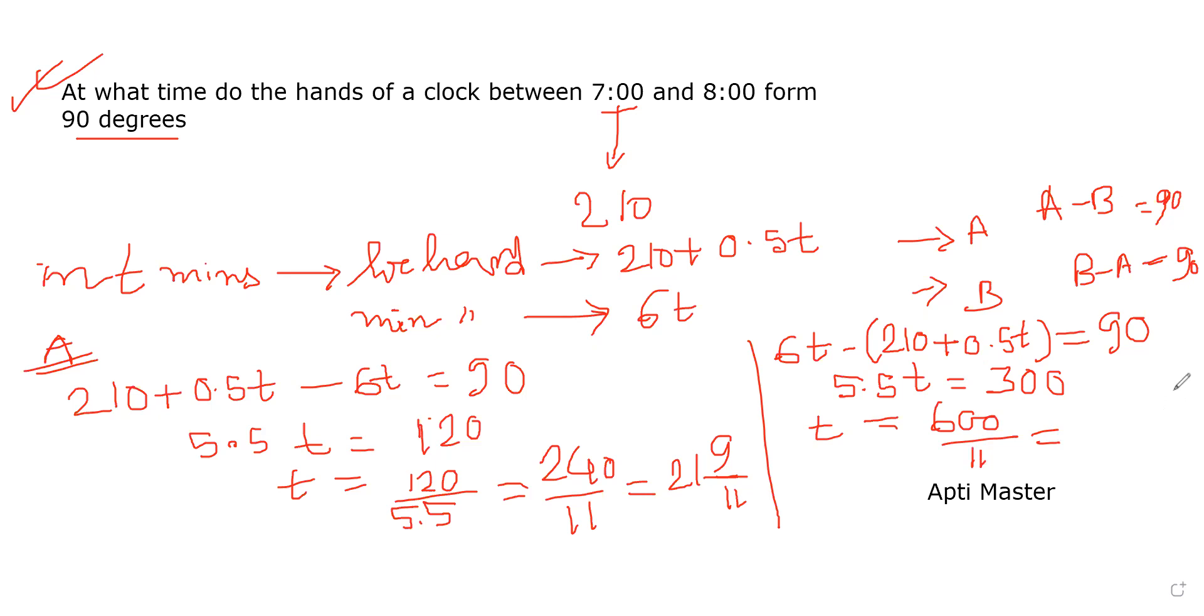So your t will be 600 by 11, which is 54 and 6 divided by 11. So at time of 7:21 and 9 by 11, and another one is 7:54 and 6 by 11.